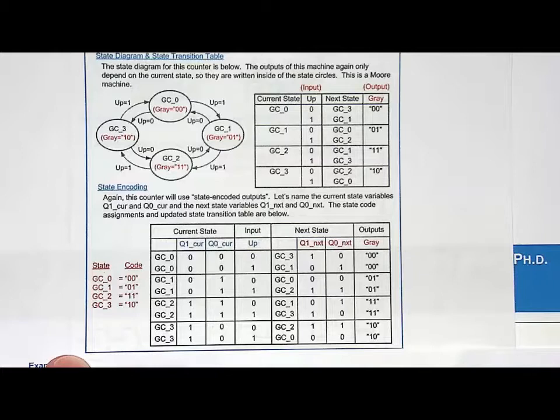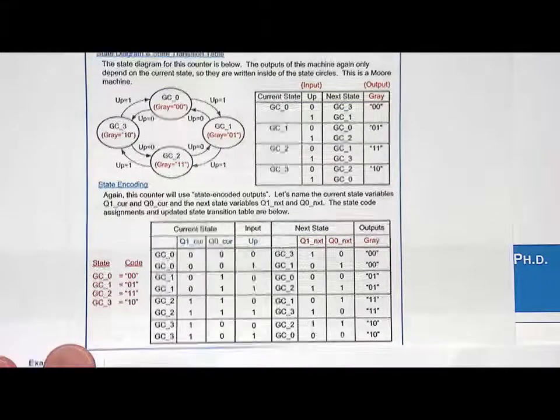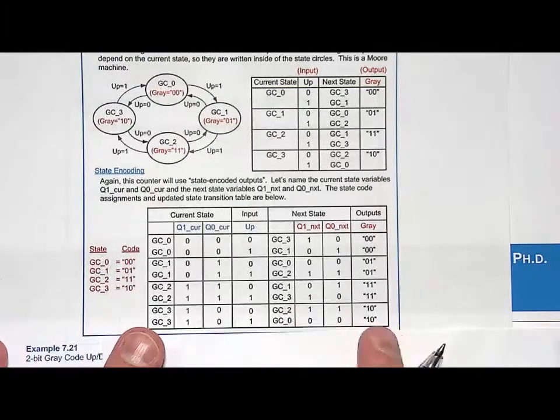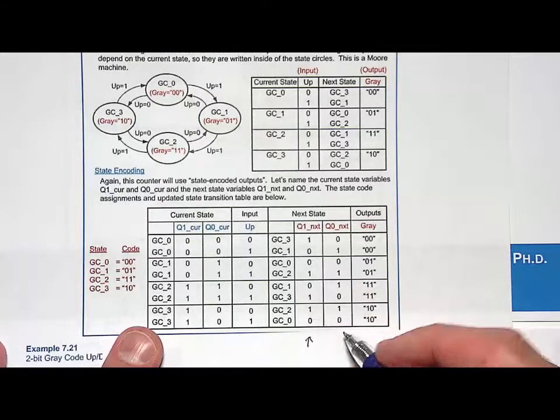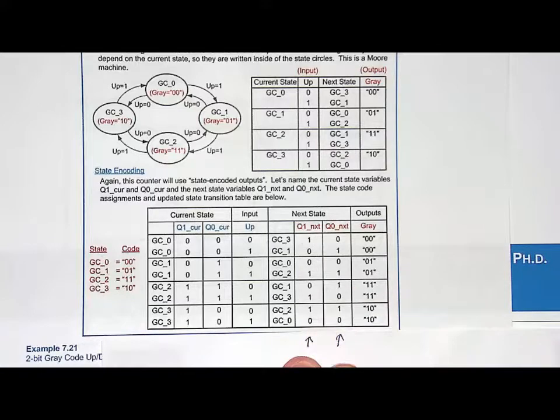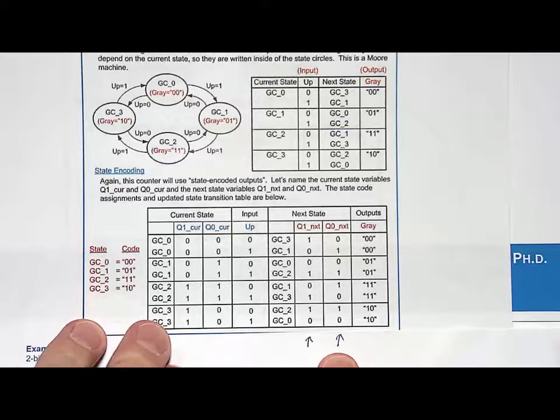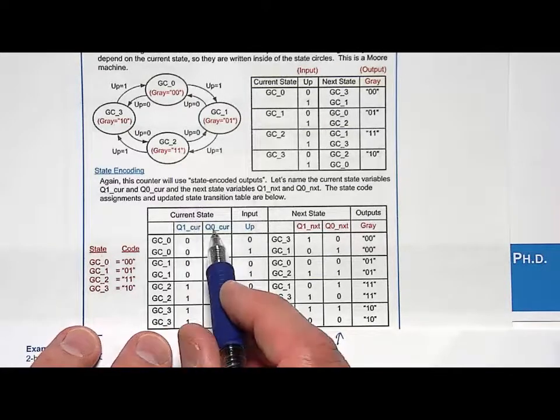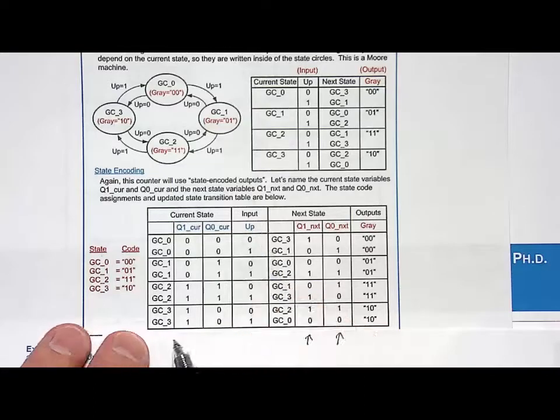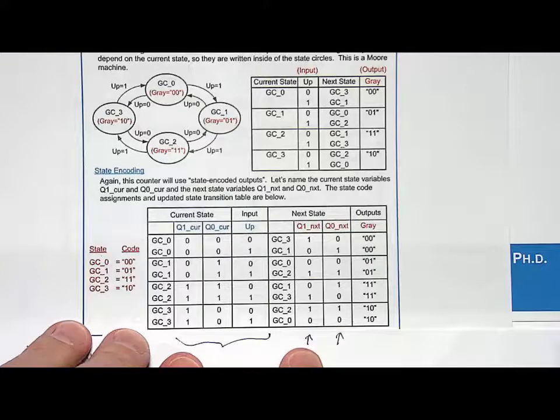Now we come along and say, well, let's do next state logic synthesis. The question is, where's my next state logic? It's right here. This bit, Q1 next, and this bit right here, each of these need a combinational logic circuit in order to produce the next state variables, the next state codes. What are the inputs? Well, the inputs are going to be the current state and the input up. So these right here, these three bits are the inputs. So it's a three-bit combinational logic circuit for Q1 next, three-bit combinational logic circuit for Q0 next.